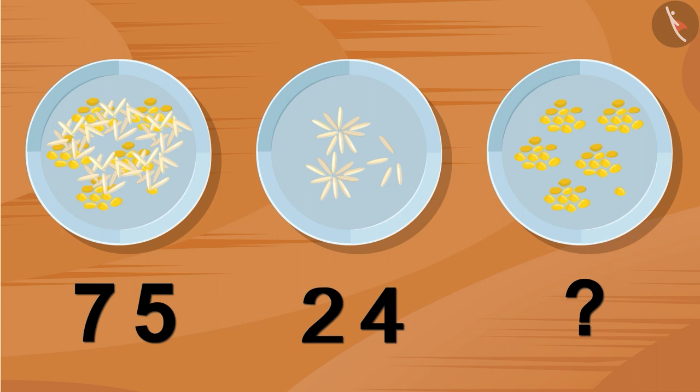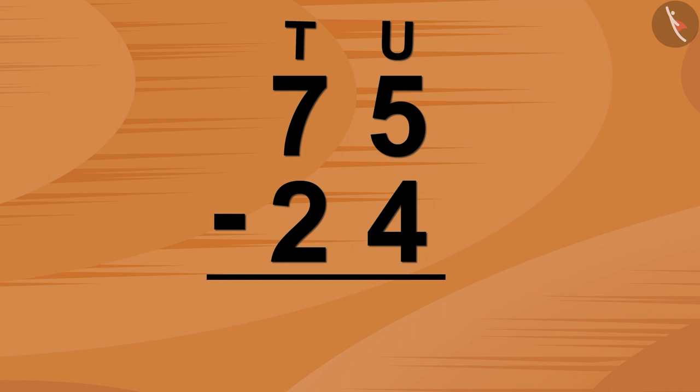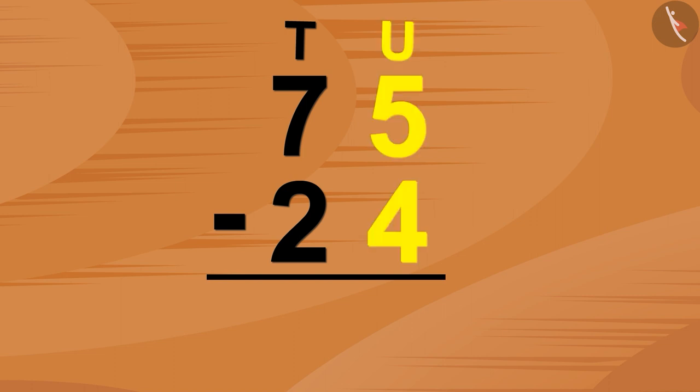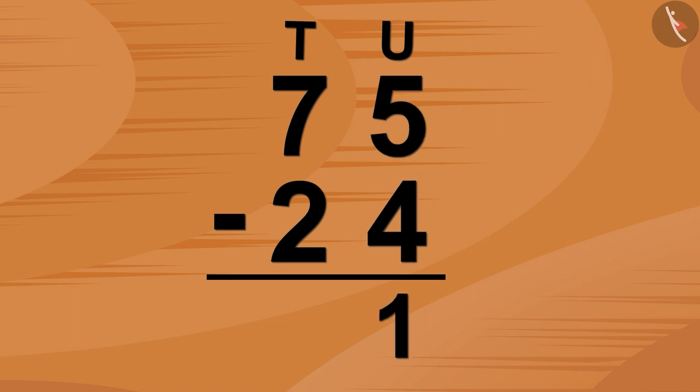Children, in this question, we have to do subtraction to find the number of pulses. Let us try to solve this problem using vertical subtraction this time. First, we will subtract the number of pulses. Let us write it like this here below the units part. Now, let's look at tens. 2 subtracted from 7 equals 5. This means our answer is absolutely correct.